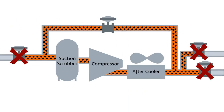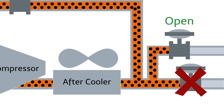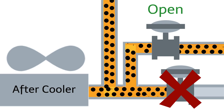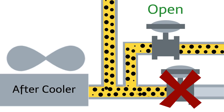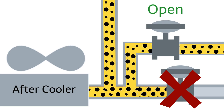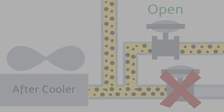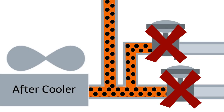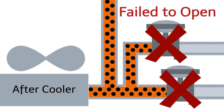We also have the blowdown line, which protects against settle-out overpressure by relieving pressure downstream of the compressor to the flare. This line should have opened when the shutdown was initiated. However, the control valve failed closed.